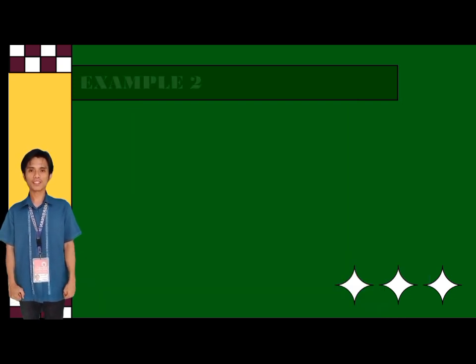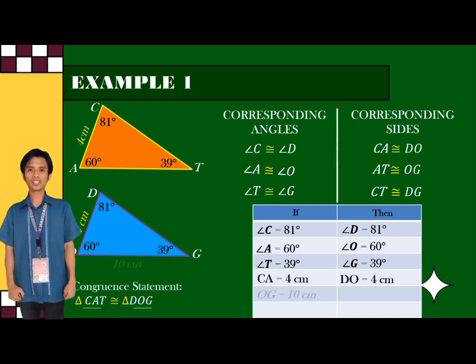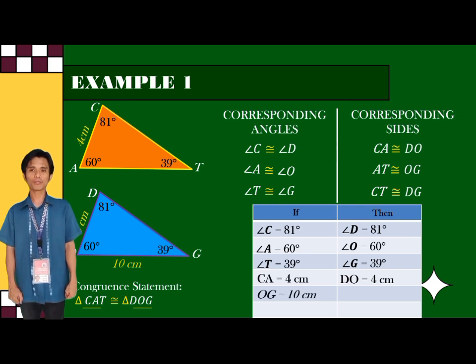And for the sides, if side CA is 4 cm, side DO is also 4 cm.